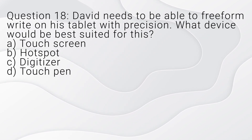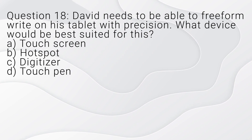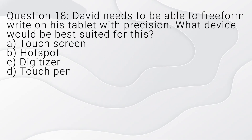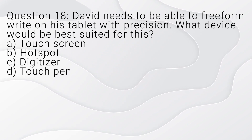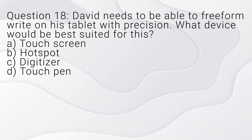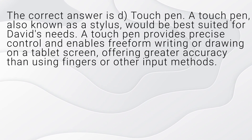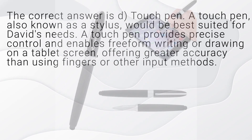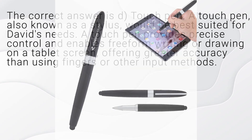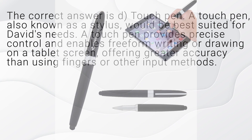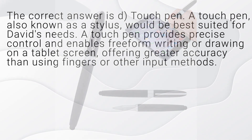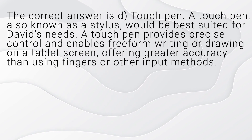Question 18. David needs to be able to freeform write on his tablet with precision. What device would be best suited for this? A. Touchscreen. B. Hotspot. C. Digitizer. D. Touchpen. The correct answer is D, touchpen. A touchpen, also known as a stylus, would be best suited for David's needs. A touchpen provides precise control and enables freeform writing or drawing on a tablet screen, offering greater accuracy than using fingers or other input methods.